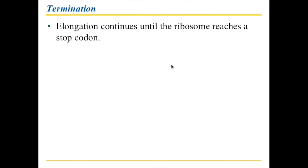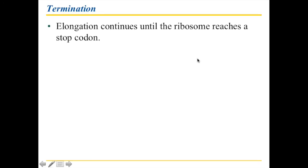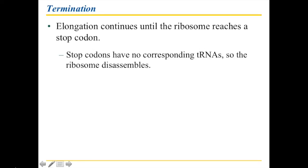Until you get the stop codon. If you have a stop codon, what that means is there is no anticodon. So if this is a stop codon, there is no anticodon anymore, and this process just literally dies — it stops. The stop codon will actually make this whole structure fall apart. The stop codons have no tRNAs, and that means the ribosome falls apart. That's termination.